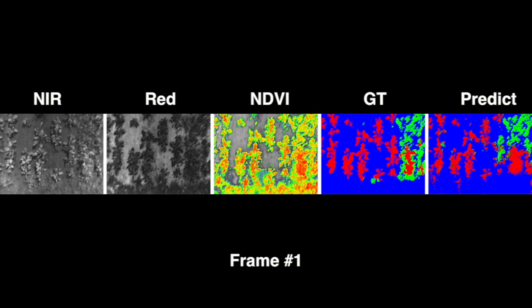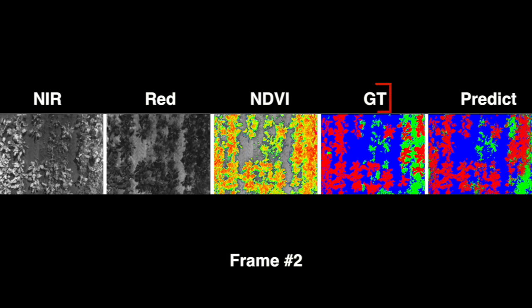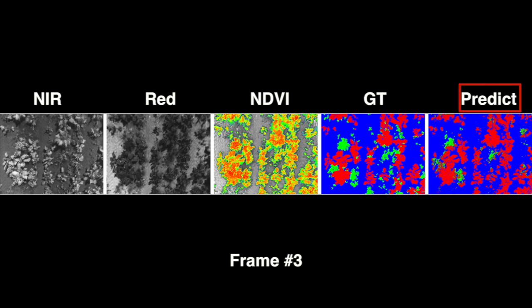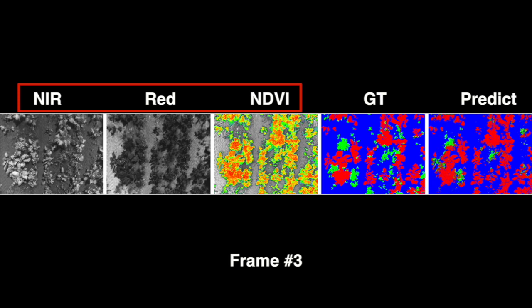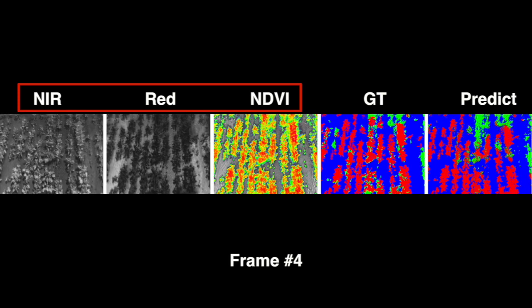For qualitative study, we show results for short and long prediction sequences. These frames show the short sequence. One can pause the video for a comparison of ground truth, labeled GT, against our network output, labeled PREDICT. The NIR, RED, and NDVI channels are the input to the network.